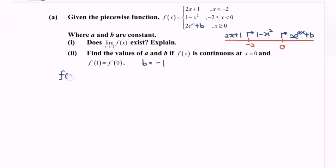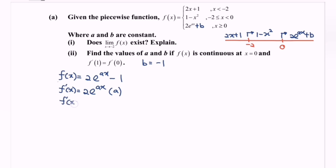So now f(X) equals 2 multiplied with exponent AX minus 1. Differentiating the situation, f'(X) equals 2 multiplied with e to the power of AX. Focusing on the power AX and differentiating, we get a factor of A. Rewriting, the first derivative equals 2A multiplied with exponent AX.